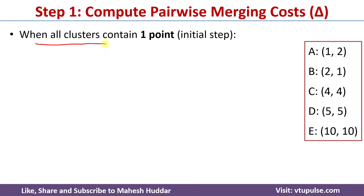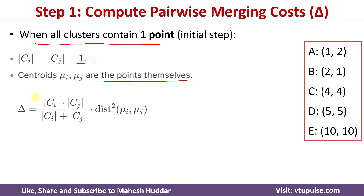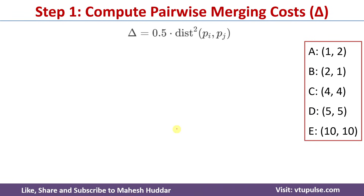Here, all clusters contain only one point, so cardinality of Ci and cardinality of Cj are each equal to 1, and centroids mu_i and mu_j are the points themselves. So the merging cost simplifies to: 1 times 1 divided by 1 plus 1, times distance squared of centroids, which becomes 0.5 times distance squared. First, we need to pair these data points, and then find the merging cost for each pair.